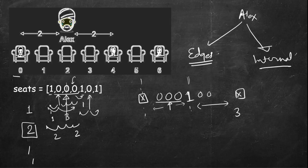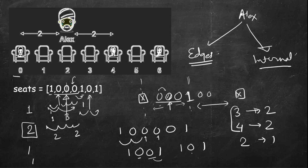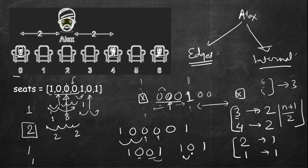For consecutive zero sections, Alex prefers the central position. For three consecutive zeros, the maximum nearest-neighbor distance is two. For four consecutive zeros it's also two. For two consecutive zeros it's one. The pattern is: for k consecutive zeros between two occupied chairs, the answer is floor((k+1)/2). So for k=1 or 2 it's one, for k=3 or 4 it's two, for k=5 or 6 it's three, and so on.